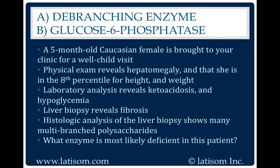Cori disease, also known as glycogen storage disease type 3, is an autosomal recessive metabolic disorder that is characterized by a deficiency in glycogen debranching enzymes.